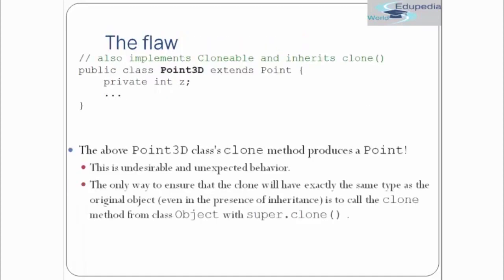What's wrong with this method? The flaw is — we have public class Point3D which extends Point and has private int z. The Point3D class clone method would produce a Point, which is undesirable and unexpected behavior. Because Point3D extends Point, all methods of Point including clone are accessible to Point3D. So Point3D could also produce a Point object, which is obviously undesirable because we want clone to return the exact same type.